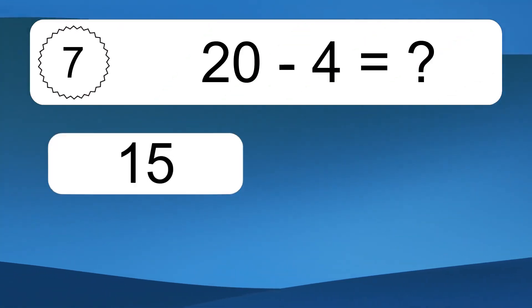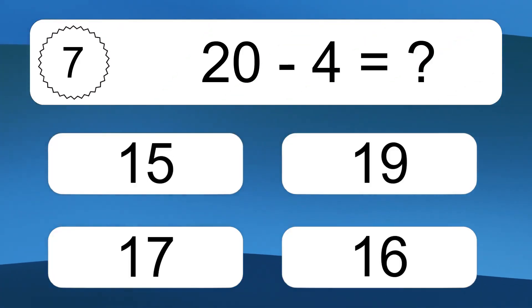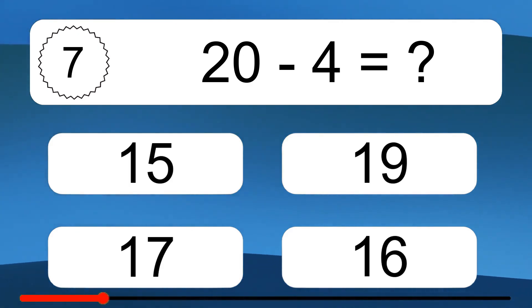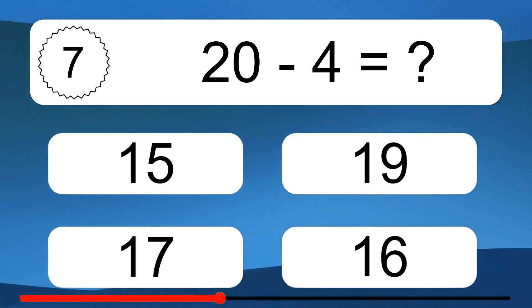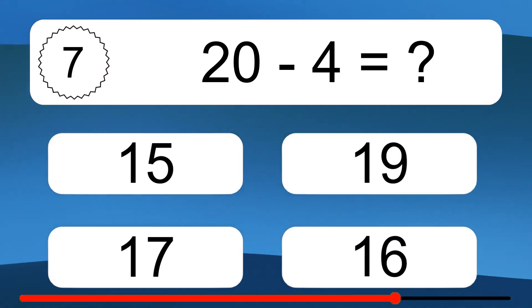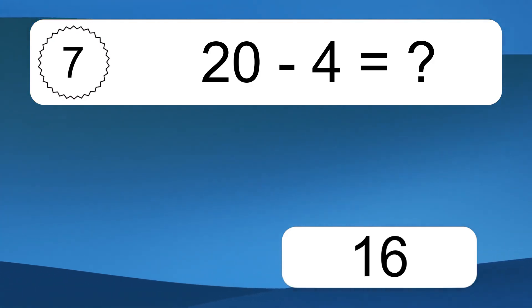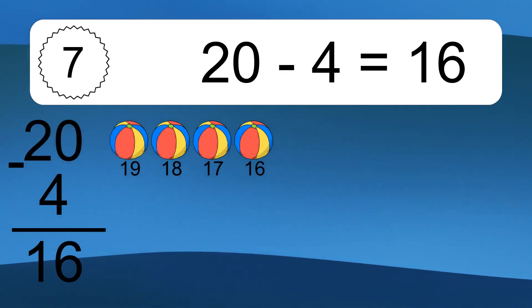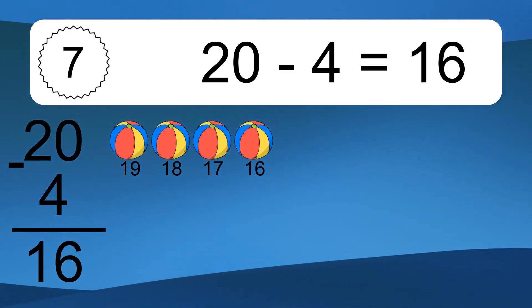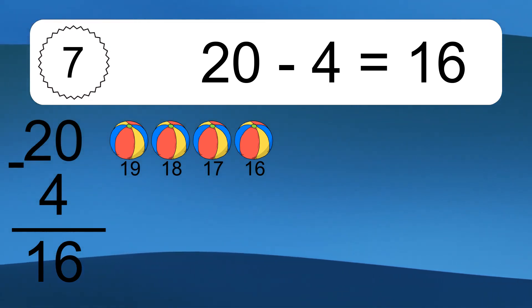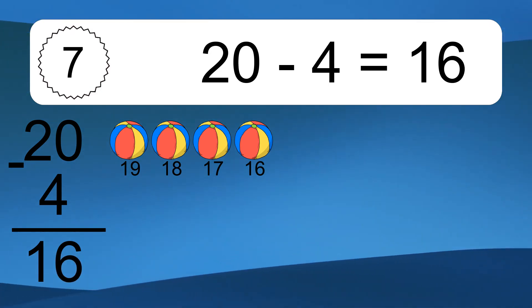20 minus 4 equals what? 20 minus 4 equals 16. Let's count it. 19, 18, 17, 16.